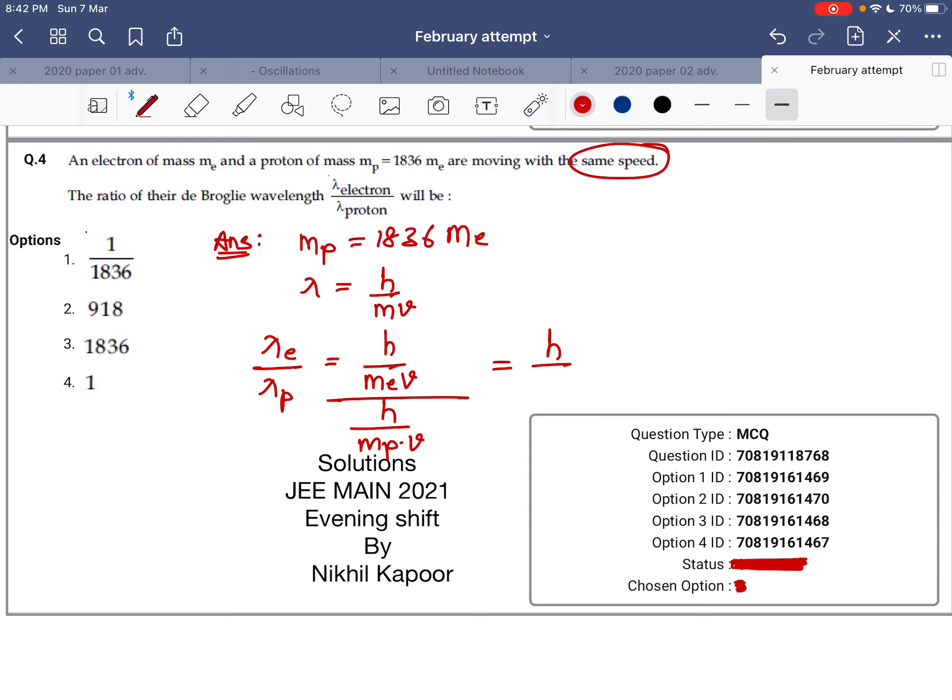If we do the reciprocal, H upon mass of electron into V, it will be mass of proton into V upon H. This H and H cancel, and since they're going with the same speed, that will also get cancelled.